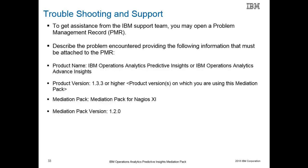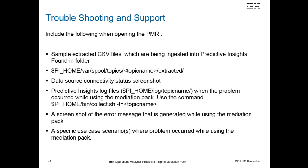If you experience any problems, you can open a problem management record with IBM support. When you open the problem ticket, you must provide the product name and version of the Predictive Insights software you are using. You must also provide the Mediation Pack name and version that you have installed. When opening the problem management ticket, you must provide screenshots and extracted files by running the command shown in the slide. You should also provide a use case description of when the problem occurred.